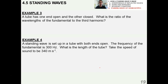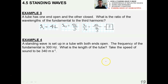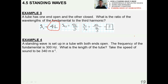Let's do a few examples. A tube has one end open and the other closed. What is the ratio of wavelengths of the fundamental to the third harmonic? Lambda 1 is 4L, and lambda 3 is 4L over 3. Here's where you are expected to understand the application of lambda equals 4L to one end open and the other closed. I got a ratio of 3 — which is obvious, right? Because the third harmonic is always three times the fundamental.